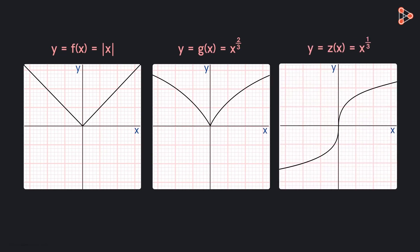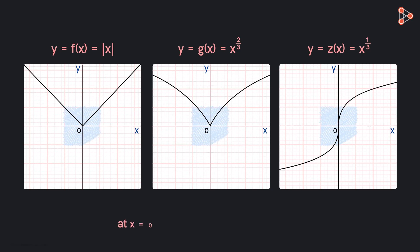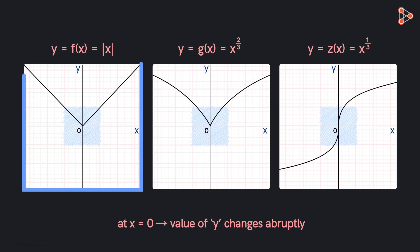Let's look at the graphs of these functions. Is there anything peculiar near the origin? We see that as X equals zero, the value of Y changes abruptly in all three functions. In the first case, as the value of X increases till here, the value of Y decreases. But then suddenly it starts to increase from this point.